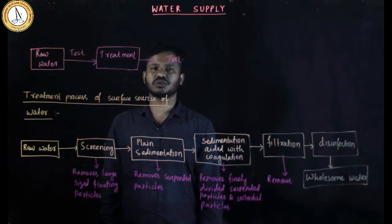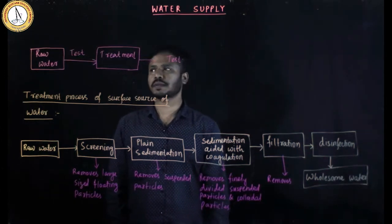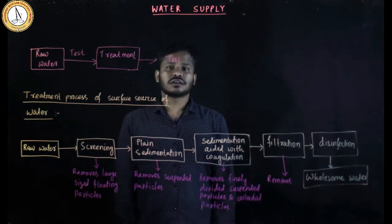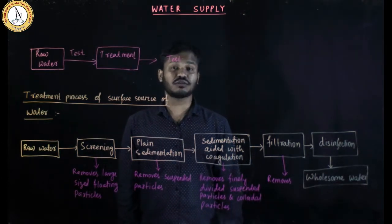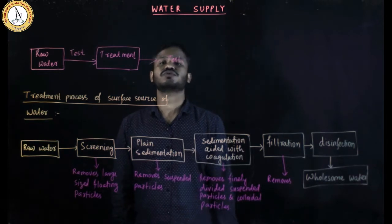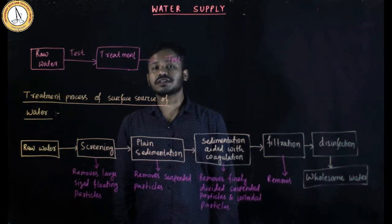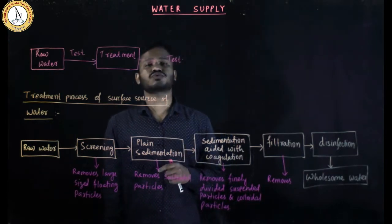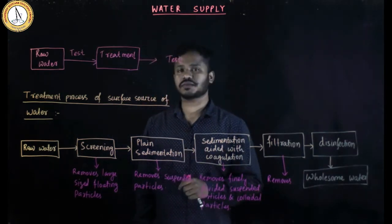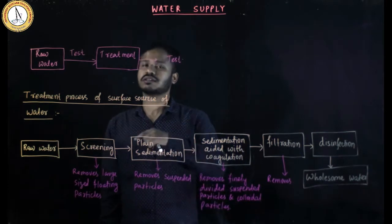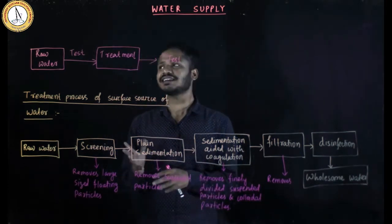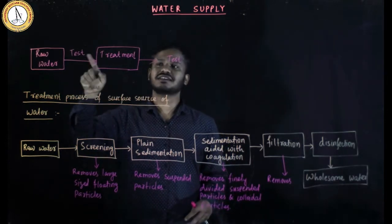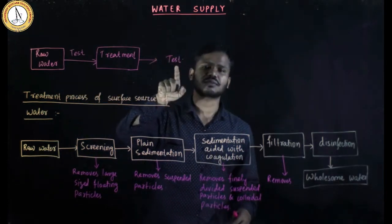We will talk about the water treatment process. The type of treatment given depends on the source of water. There are various sources of water, namely surface sources and underground sources. Depending on the source, the treatment will be given. Before treatment, the water will be tested, and after treatment, the water will be tested again.